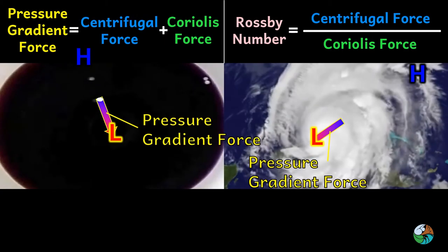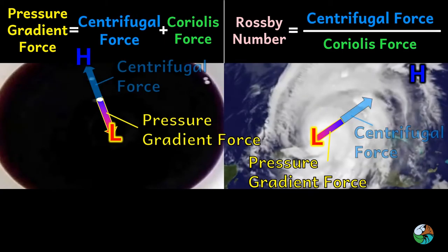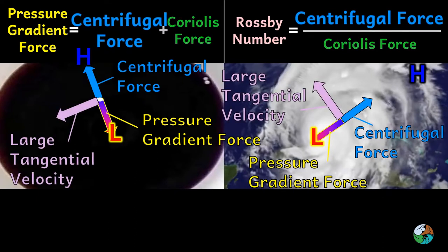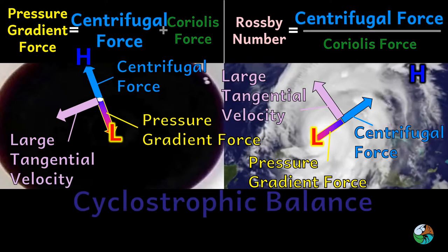The pressure gradient force balances with the very large centrifugal force due to the large tangential velocity. This is called cyclostrophic balance. The value of the Rossby number is much larger than 1.